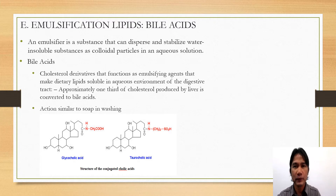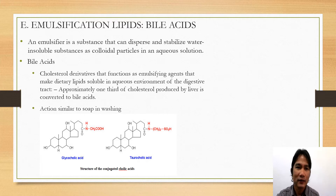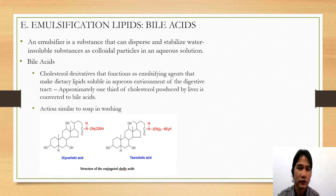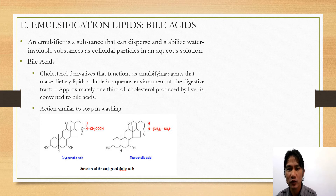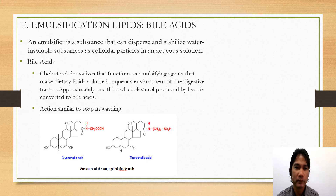Lipids that could perform that function are called bile acids. Bile acids are derived from cholesterol, and their function is as an emulsifying agent. These bile acids make the dietary lipids soluble or become soluble in the aqueous environment of the digestive tract. When these dietary lipids, such as the TAG or triacylglycerol, they are non-polar — they don't interact with water. So the role of these bile acids is to make those dietary lipids become soluble in the aqueous environment.